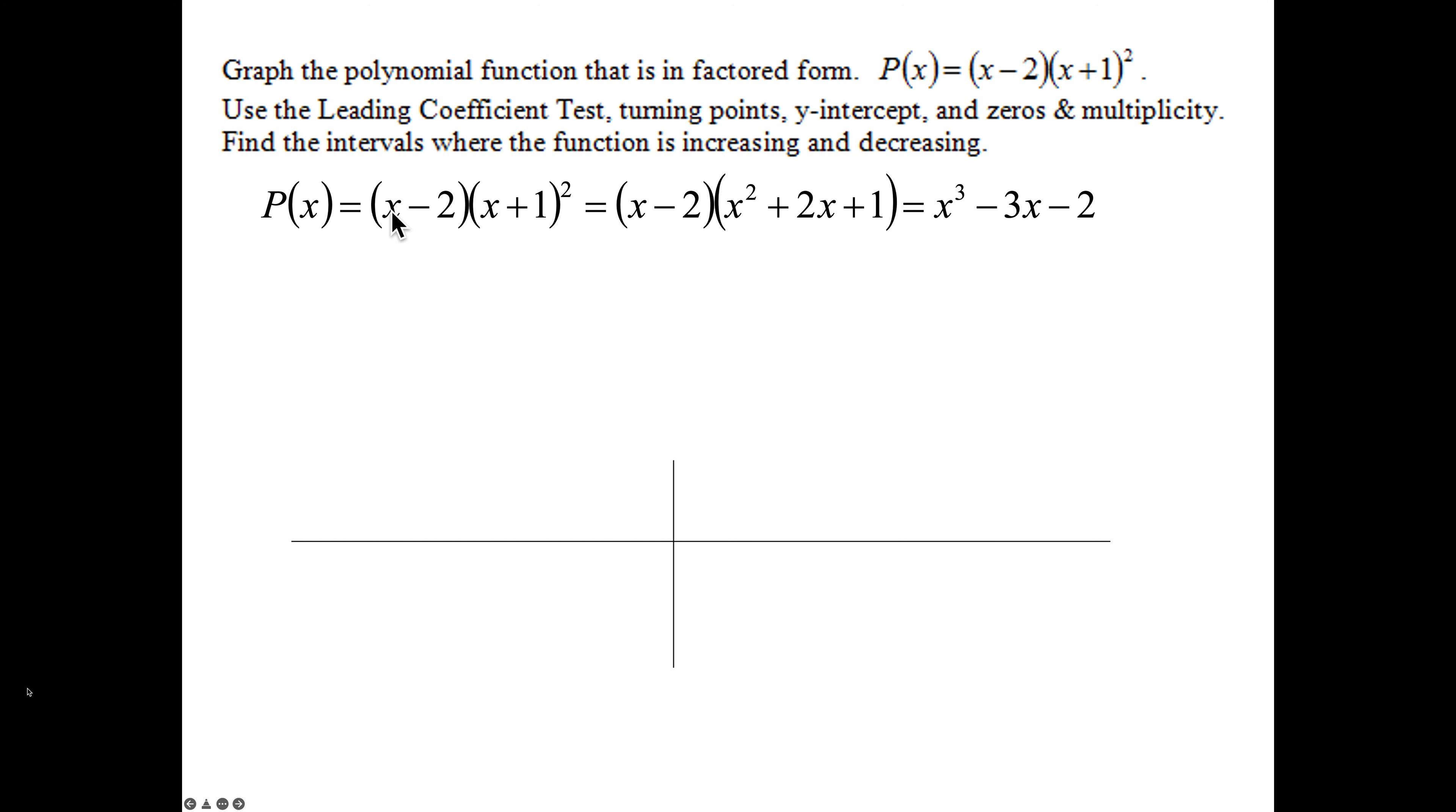Number one, take the leading terms in each binomial, including the powers. x times x², x³. There is your leading term. Minus 2 or negative 2 times positive 1² - that's 1 times negative 2, negative 2. We don't need the middle terms.